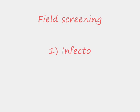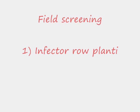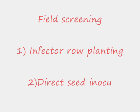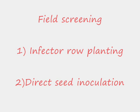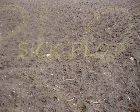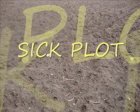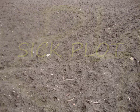In field screening, there are two methods. The first one is the infecter row planting and the second one is the direct seed inoculation. First, a seed plot is created by burying the infected plants in the soil.